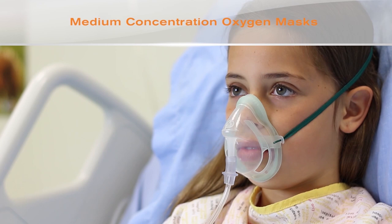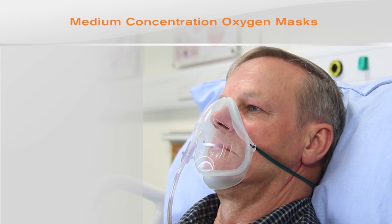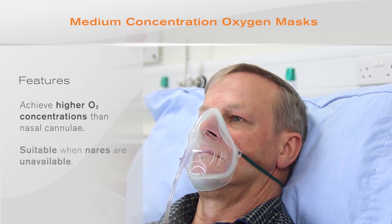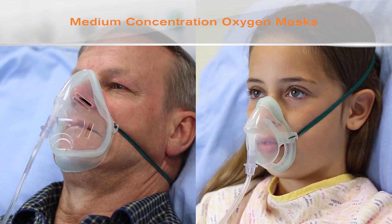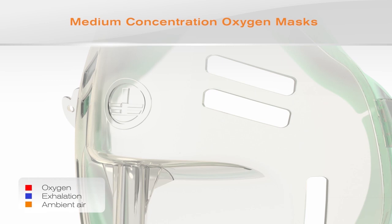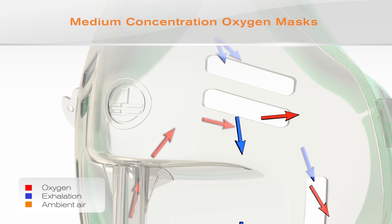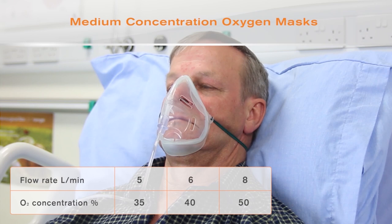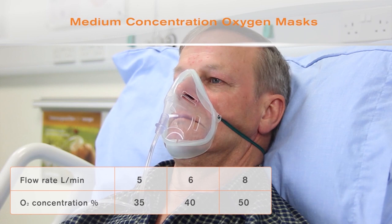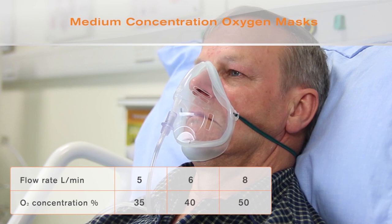Medium concentration oxygen masks provide another option for the delivery of low-flow oxygen therapy. These may be used for concentrations higher than those achievable with nasal cannulae, or when the nares are unavailable. These masks are available in adult and paediatric sizes. The red arrows represent oxygen delivered to the mask, the orange arrows represent ambient air drawn in through the mask vents as the patient inhales, and the blue arrows represent exhalation. A flow rate of 5 to 8 litres per minute will deliver concentrations between 35 and 50% oxygen to most adult patients.